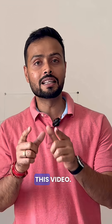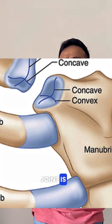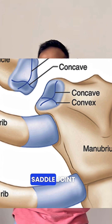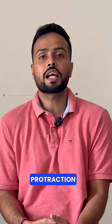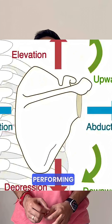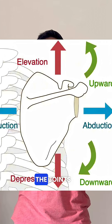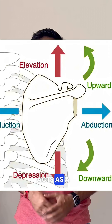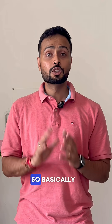The sternoclavicular joint is also a kind of saddle joint, which performs four movements: elevation, depression, protraction, and retraction. When you are performing elevation and depression, the joint acts as a convex-concave joint.